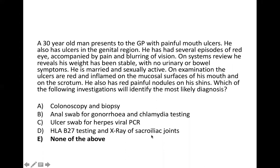This is a two-step question: first you need to know the diagnosis, and then you need to know the investigation. The key features are ulcers in the mouth and ulcers in the genital region, which points towards Behcet's disease. There's also a red eye with pain and blurring of vision pointing towards anterior uveitis, and red painful nodules on the shins indicating erythema nodosum.